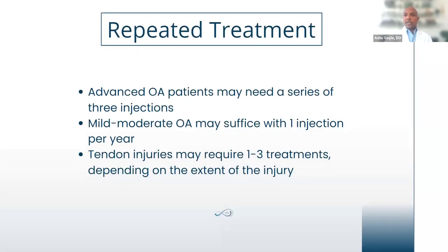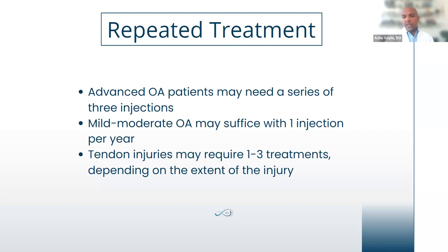To optimize outcomes, set realistic expectations. For mild to moderate osteoarthritis, we've learned from numerous studies that one injection per year may be all they need. If you're first starting in regenerative medicine, stick to mild to moderate osteoarthritis. Through the years, I've also been treating advanced osteoarthritic patients — in my practice I've found that a series of three tends to yield optimal outcomes. Tendon injuries may require one to three treatments depending on the extent of injury.